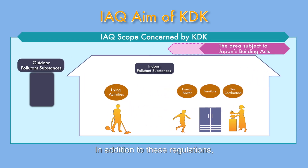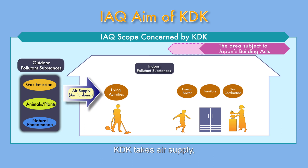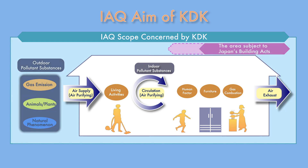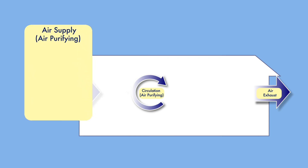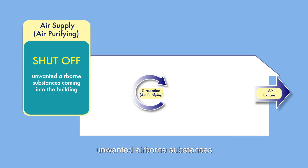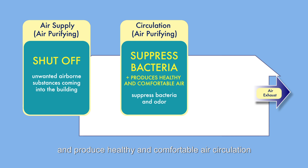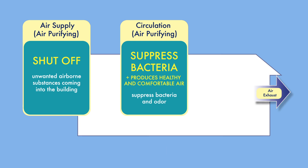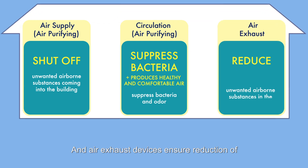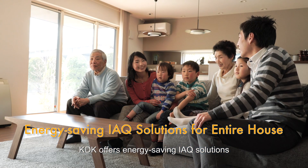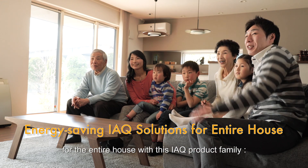In addition to these regulations, KDK takes air supply, air exhaust and air circulation into consideration. Air supply devices shut off unwanted airborne substances from coming into the building. Air circulation devices suppress air polluting substances and produce healthy and comfortable air circulation inside the building. Air exhaust devices ensure reduction of unwanted airborne substances in the building. KDK offers energy-saving IAQ solutions for the entire house with this IAQ product family.